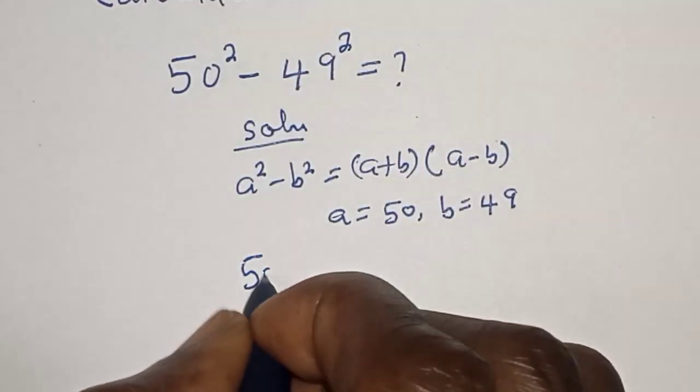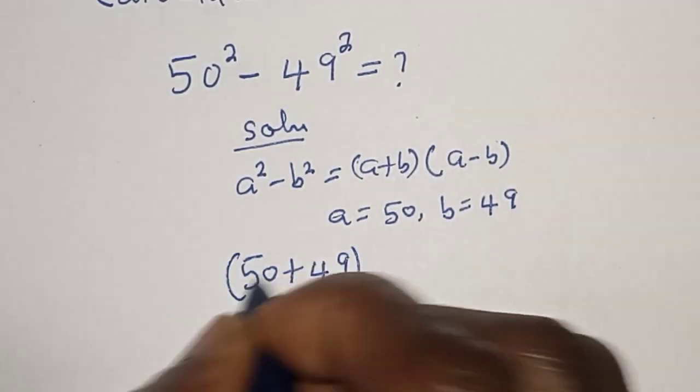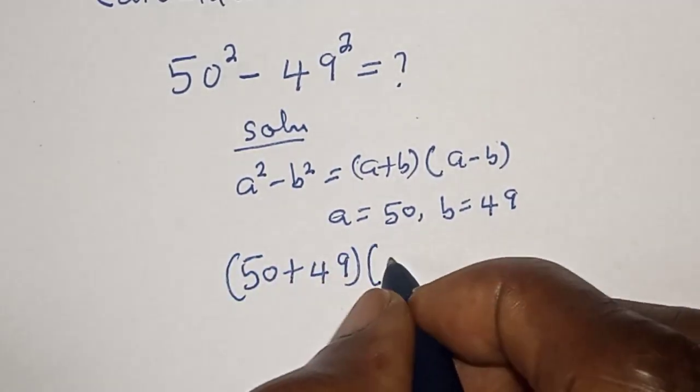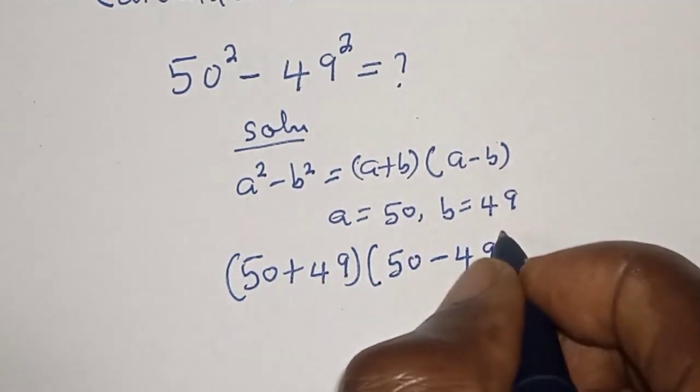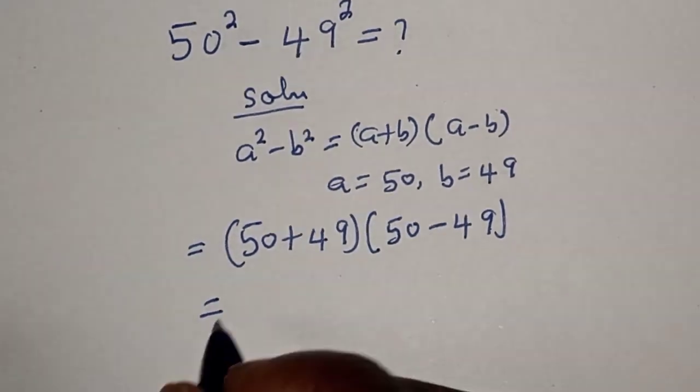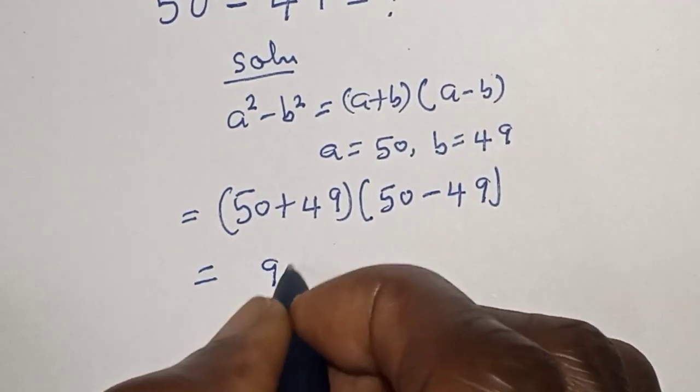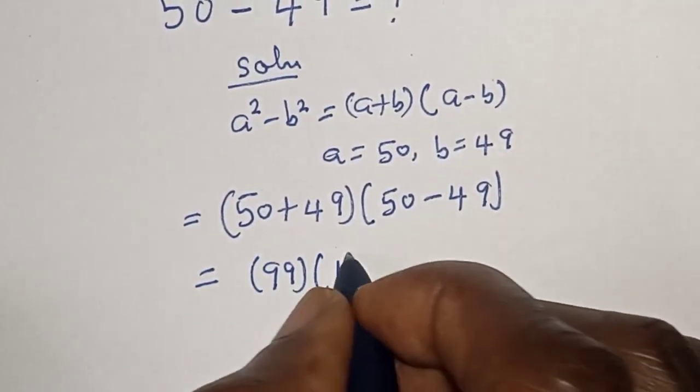50 plus 49 multiply by 50 minus 49. This is equal to 50 plus 49, that is 99, bracket 50 minus 49 is 1.